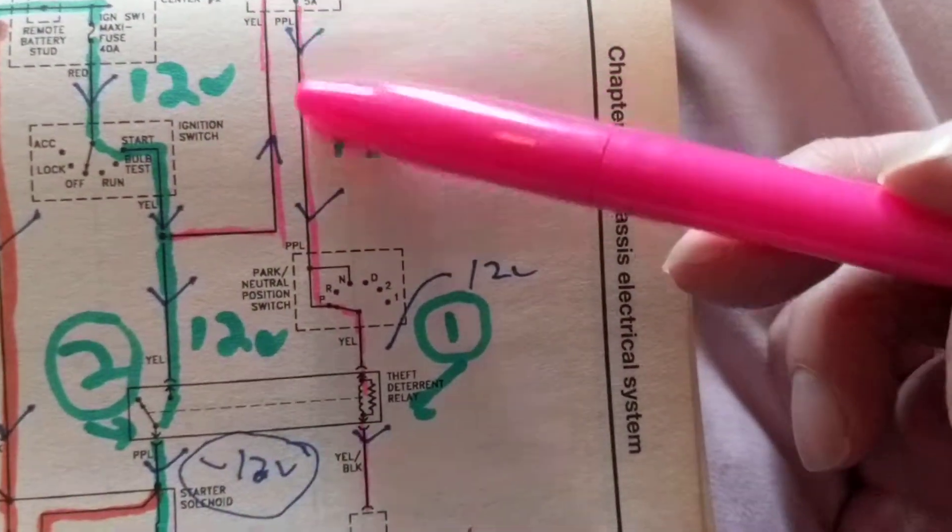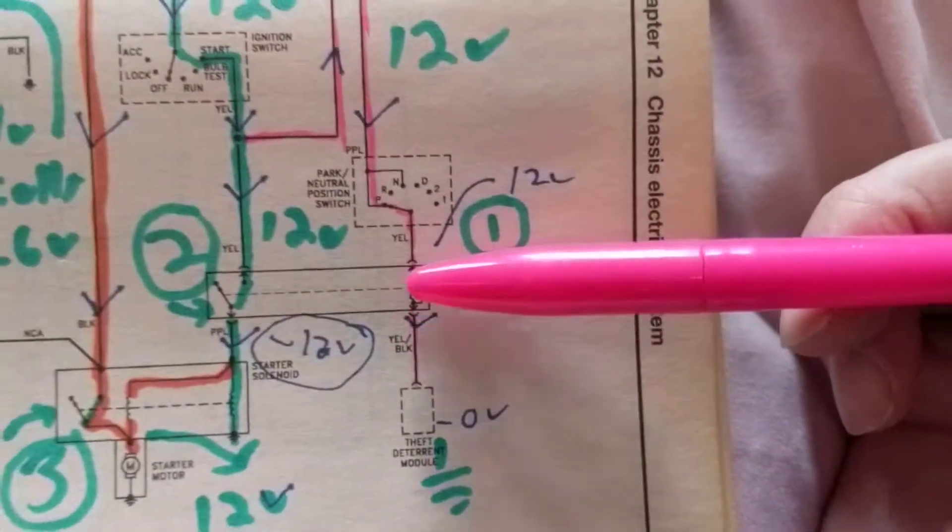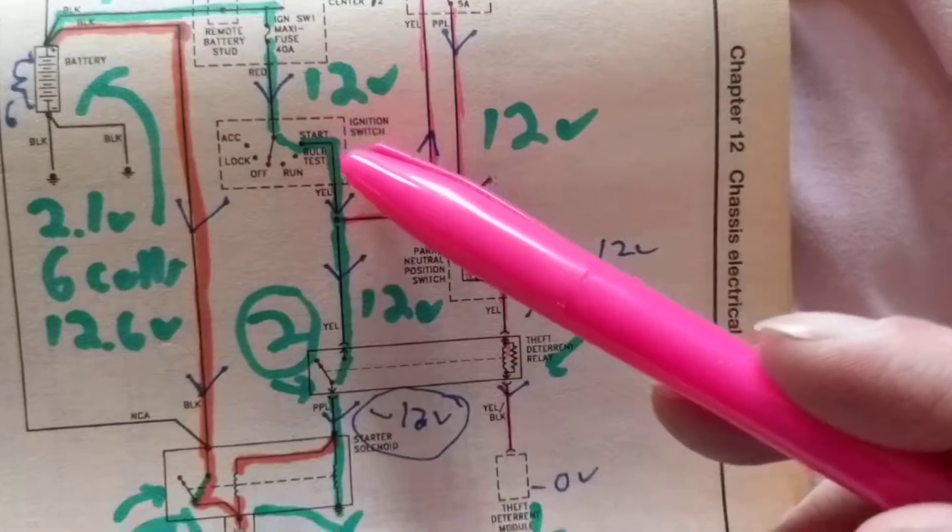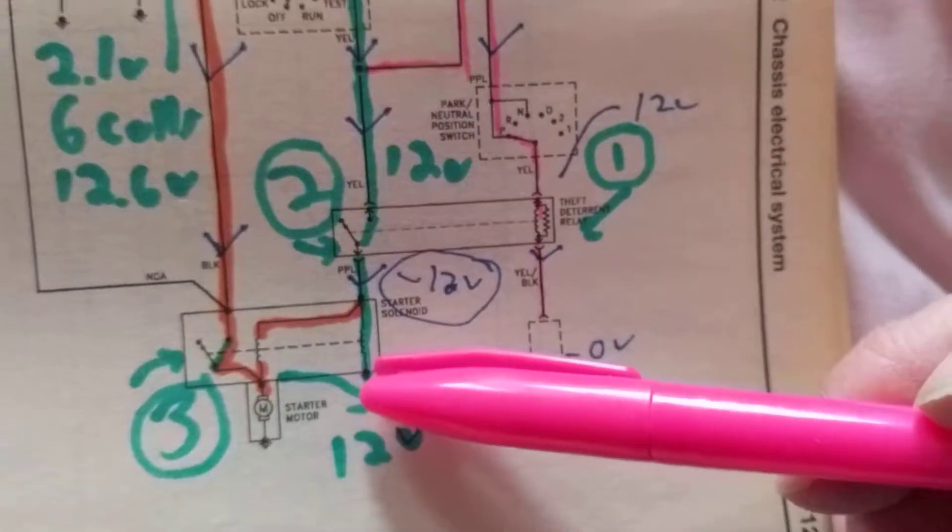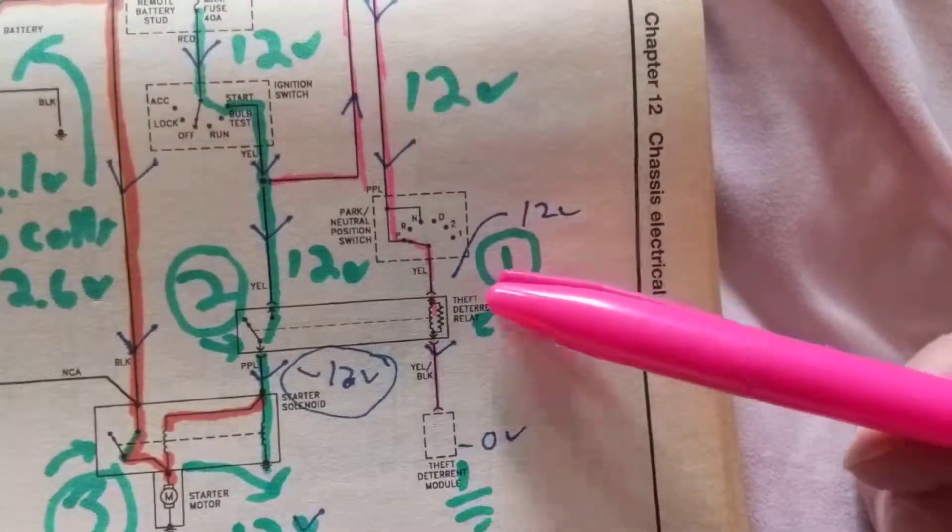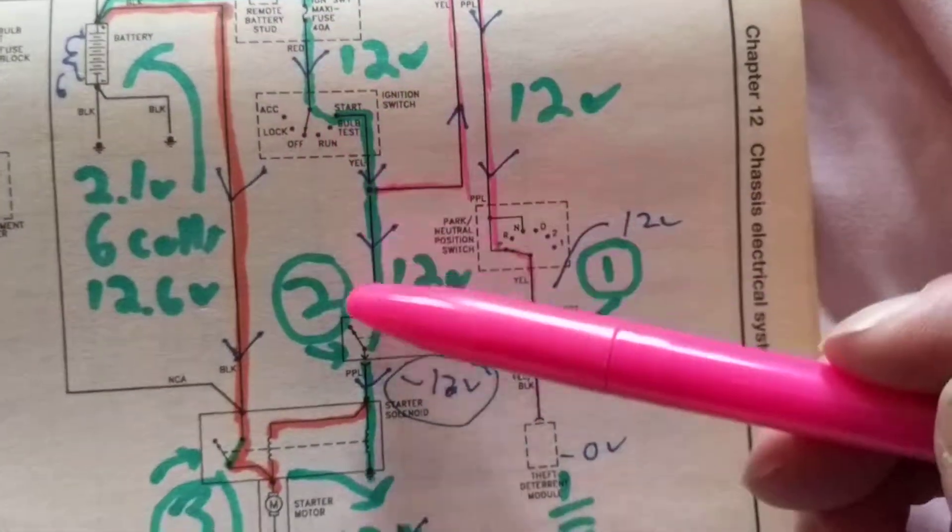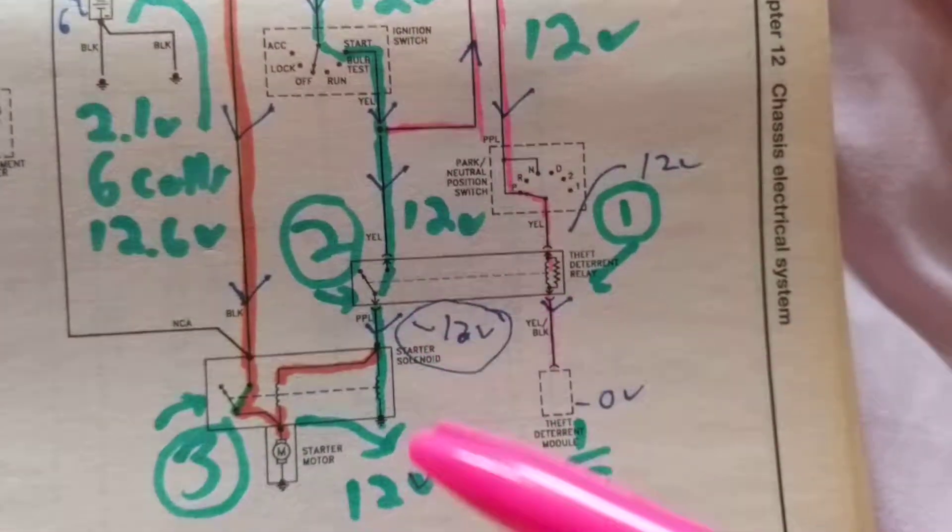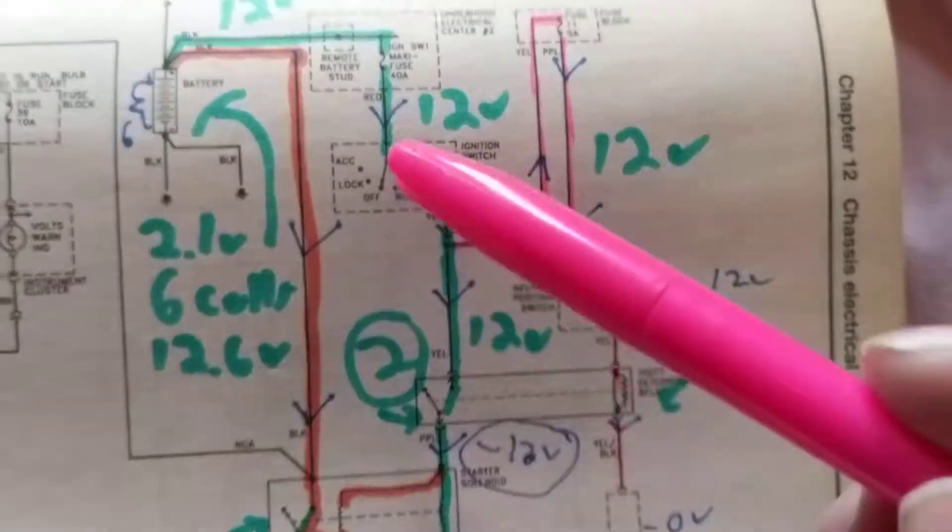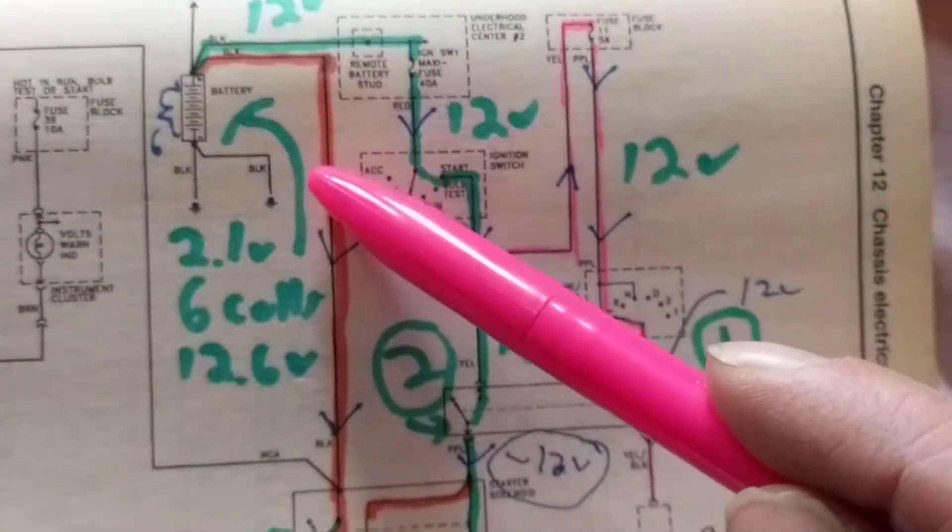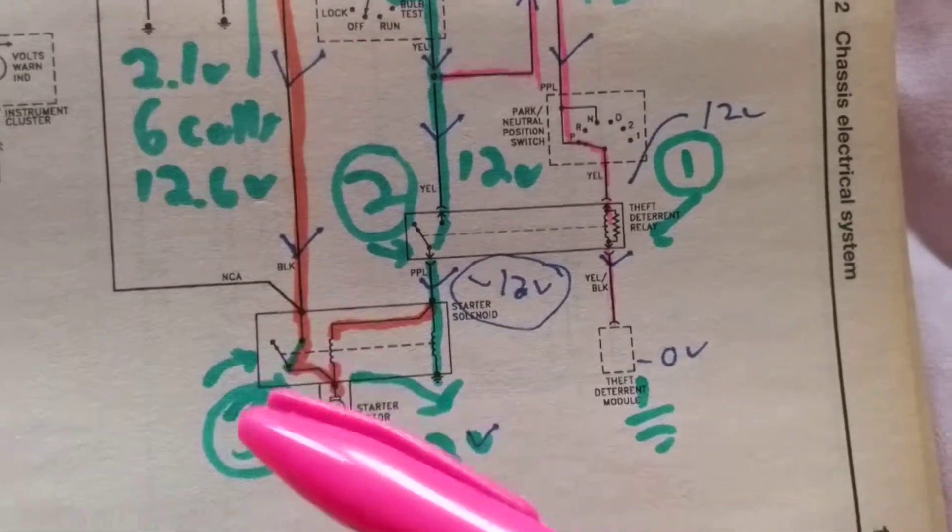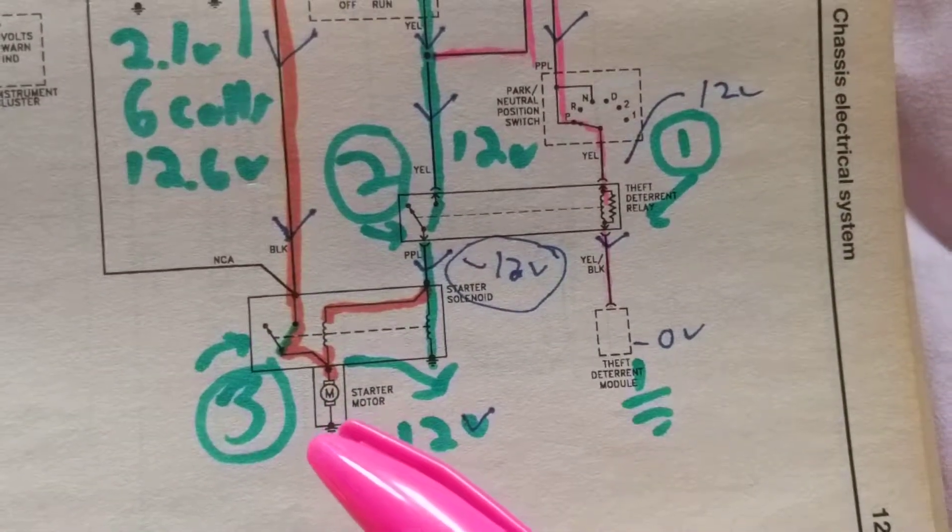Therefore, once, first, we need this to happen, the theft deterrent relay to be activated. Then, we can get current to flow through the starter solenoid. This is number one. Has to happen. This is number two. Once this is activated, again, a solenoid, like a relay, then current can flow. The orange one can flow. This will be activated. This will be pulled in. Now, the starter motor has 12 volts.